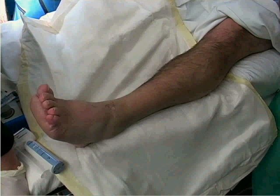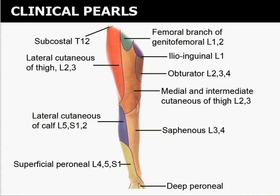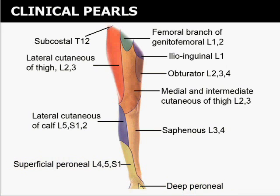The saphenous nerve block is a single nerve block that can be performed at the level of the knee or at the level of the ankle. Here we present the block at both locations. It is important to recognize that the saphenous block is often performed as a supplement to the popliteal block or ankle block. The anterior cutaneous nerve distribution in the lower leg includes the lateral cutaneous nerve, the saphenous nerve, and the superficial and deep perineal nerves, which are branches of the common perineal nerve. Thus, an isolated saphenous nerve block provides patchy regional anesthesia when performed alone.